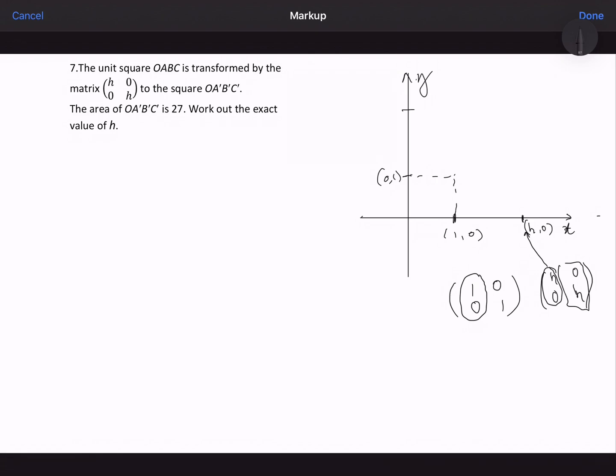And the second point would be here somewhere, let's say, and that point would be 0, H. So this would be my transformed unit square. And what this question is saying is that this area of this square, this new square, is 27.